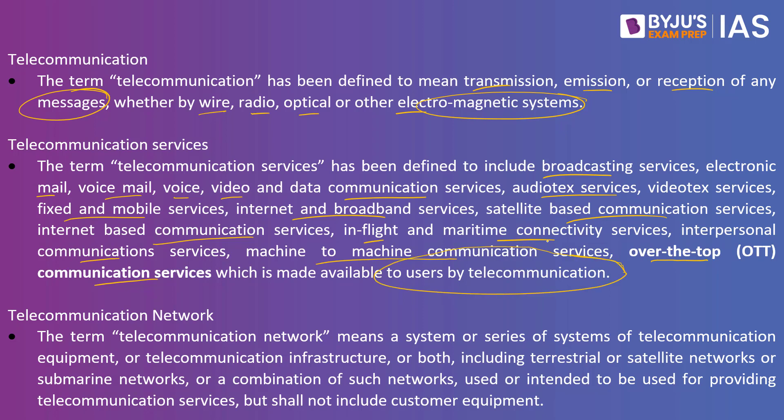When we speak about over-the-top communication services, these are simply called OTT platforms. Examples include Amazon Prime and Netflix. Initially these platforms hosted programs and movies, but over a period of time they started engaging with production houses and releasing their own web series and short movies. Such OTT platforms are now brought under the ambit of telecommunication services.